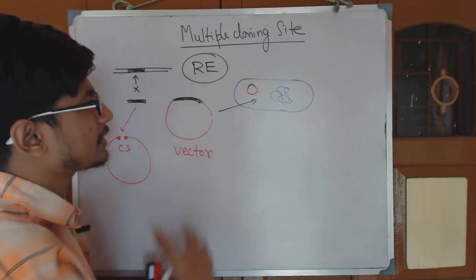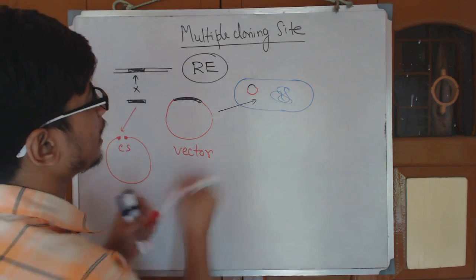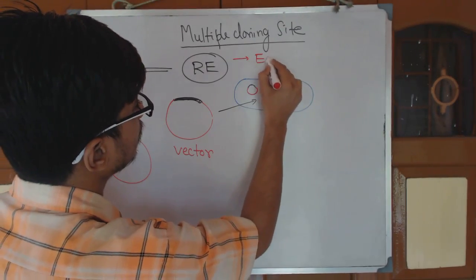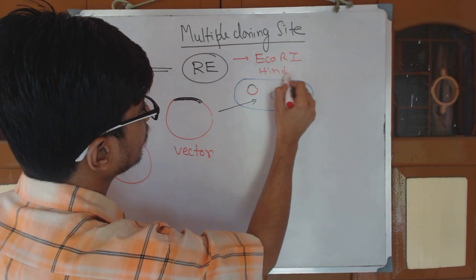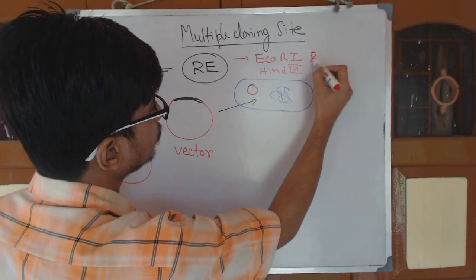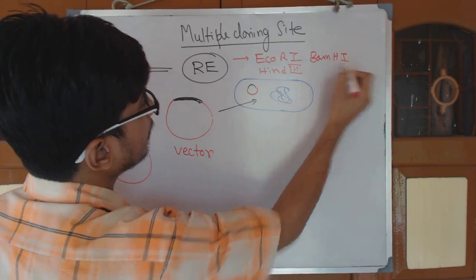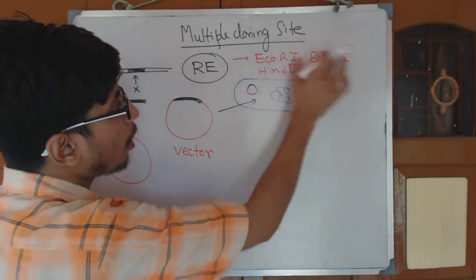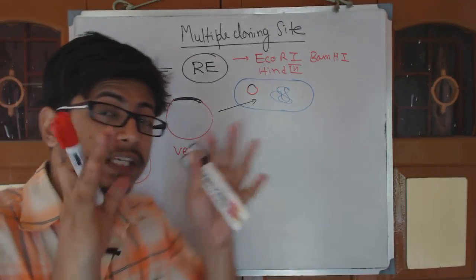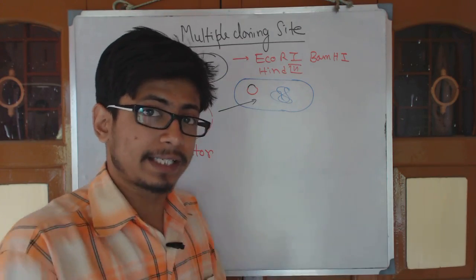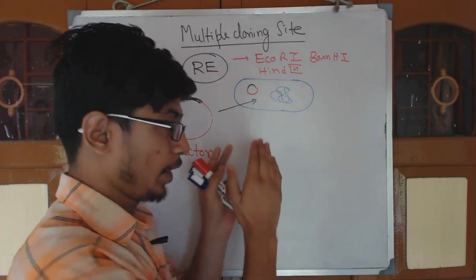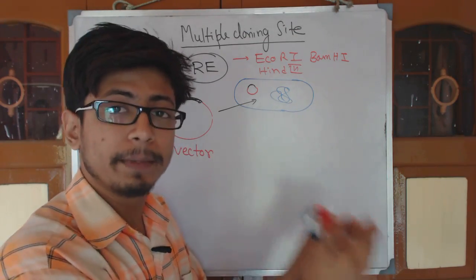There are multiple examples like ECO-R1, HIN-D3, BAM-H1. All of these restriction enzymes have a specific site, that's why we call it a restriction site. Except for that site and sequence, they will not be able to cleave the DNA.